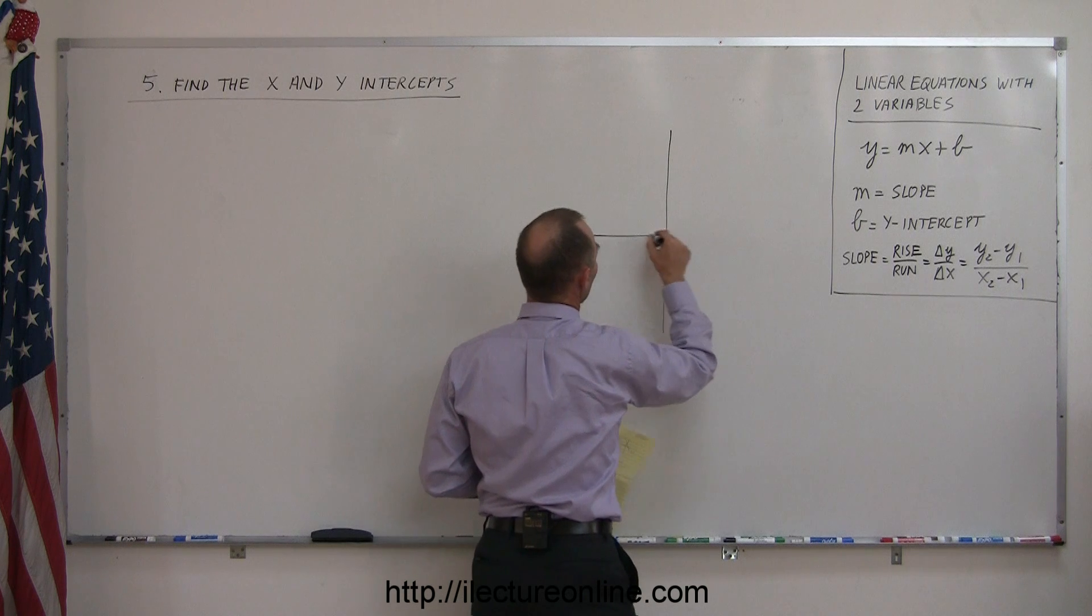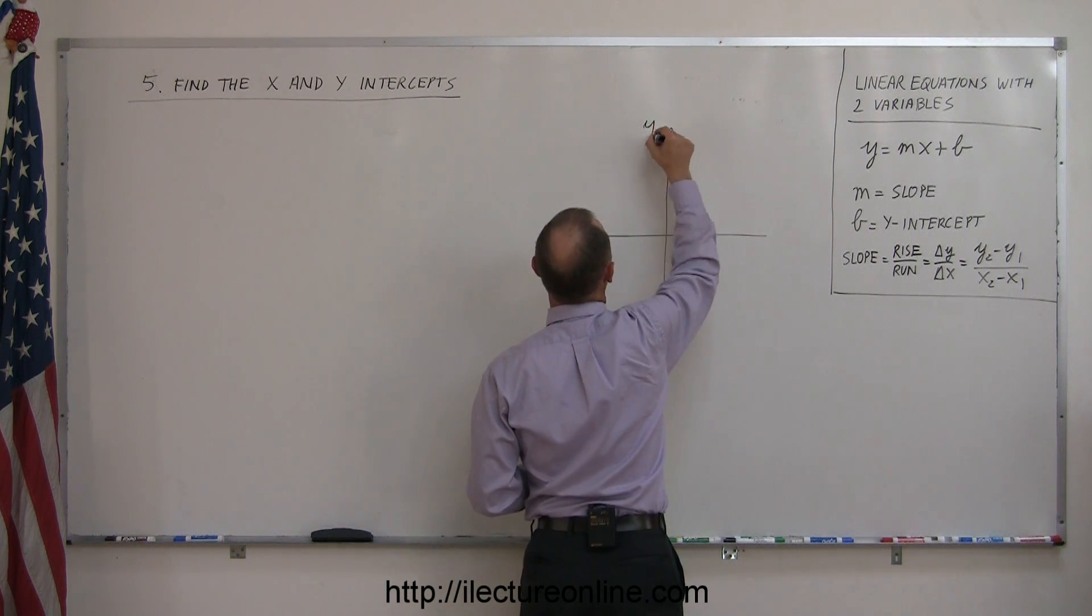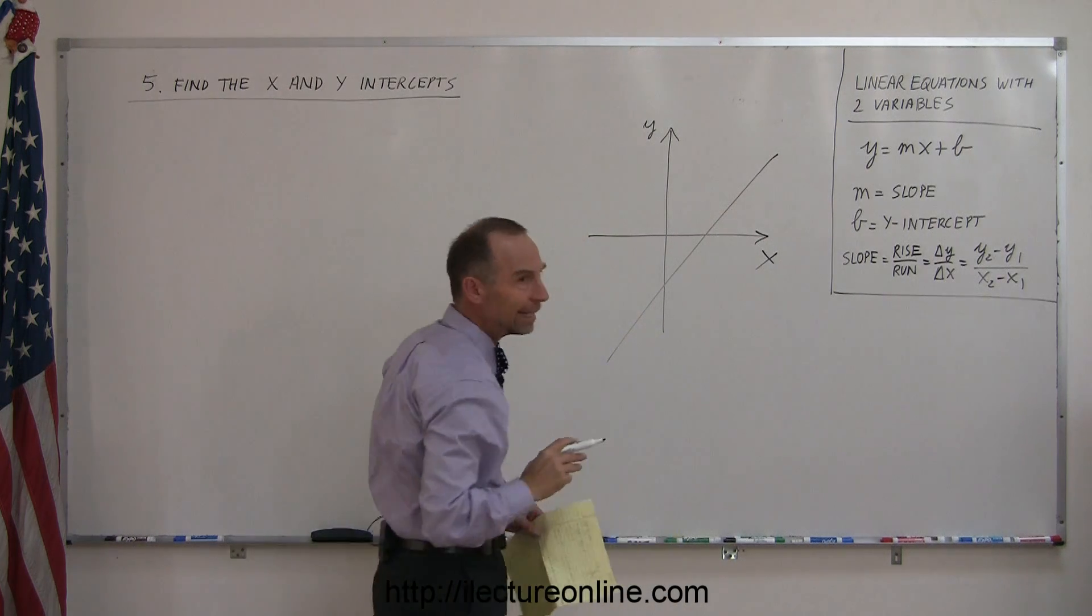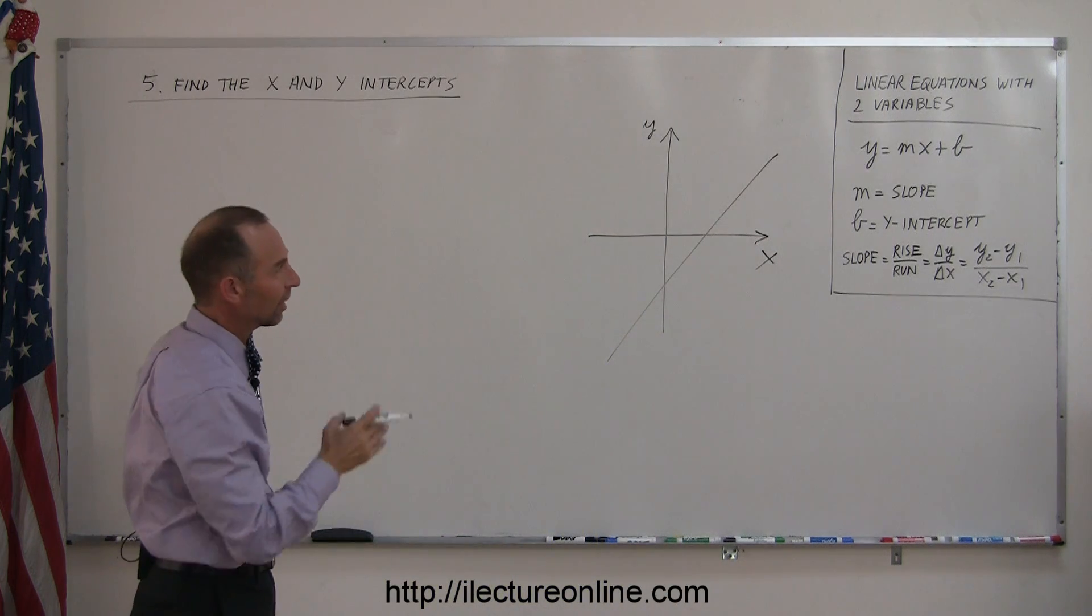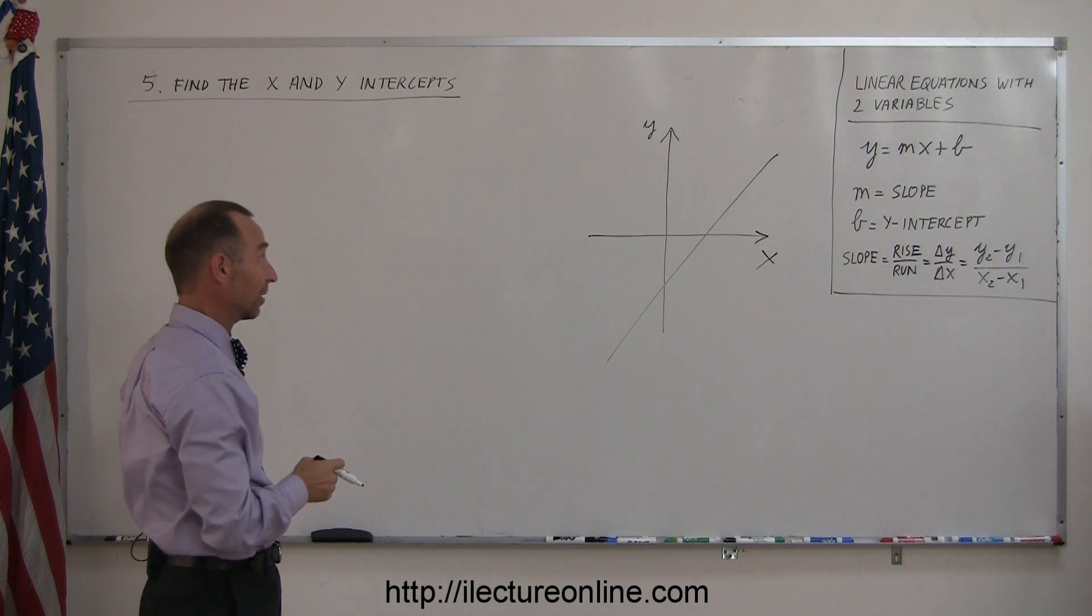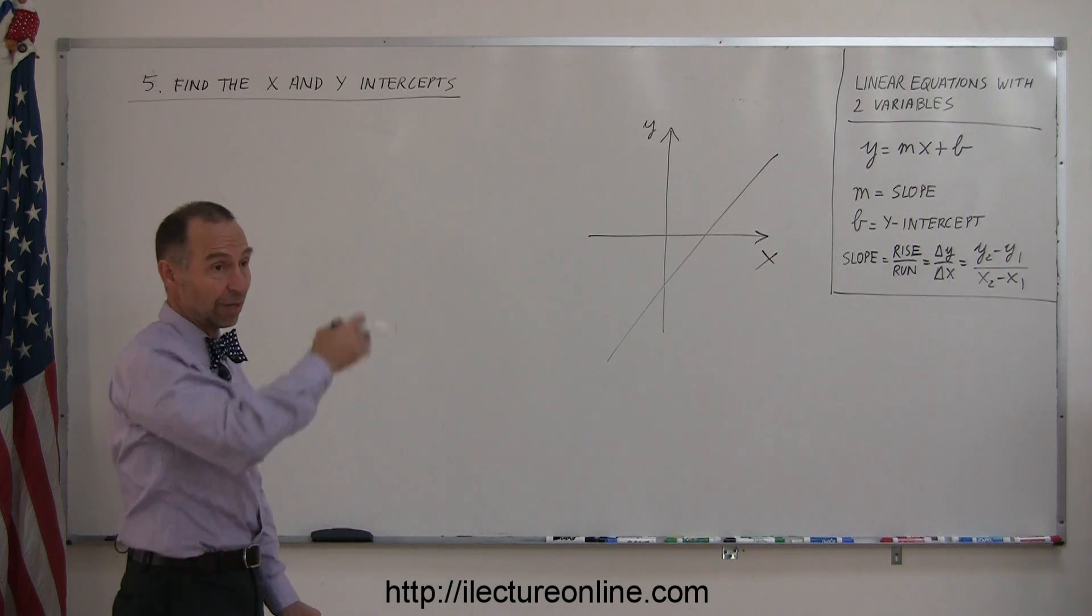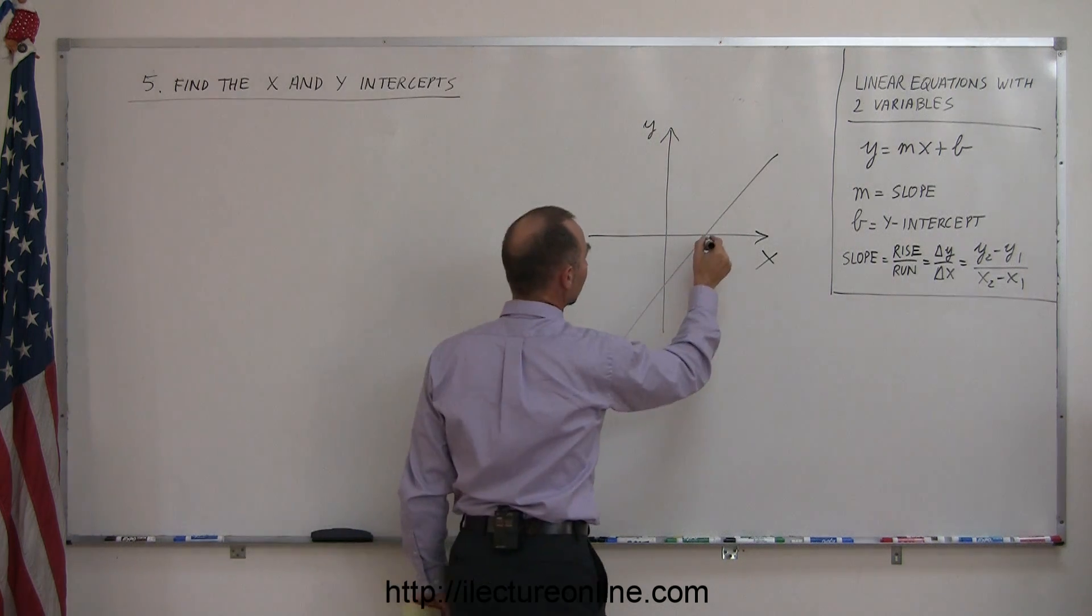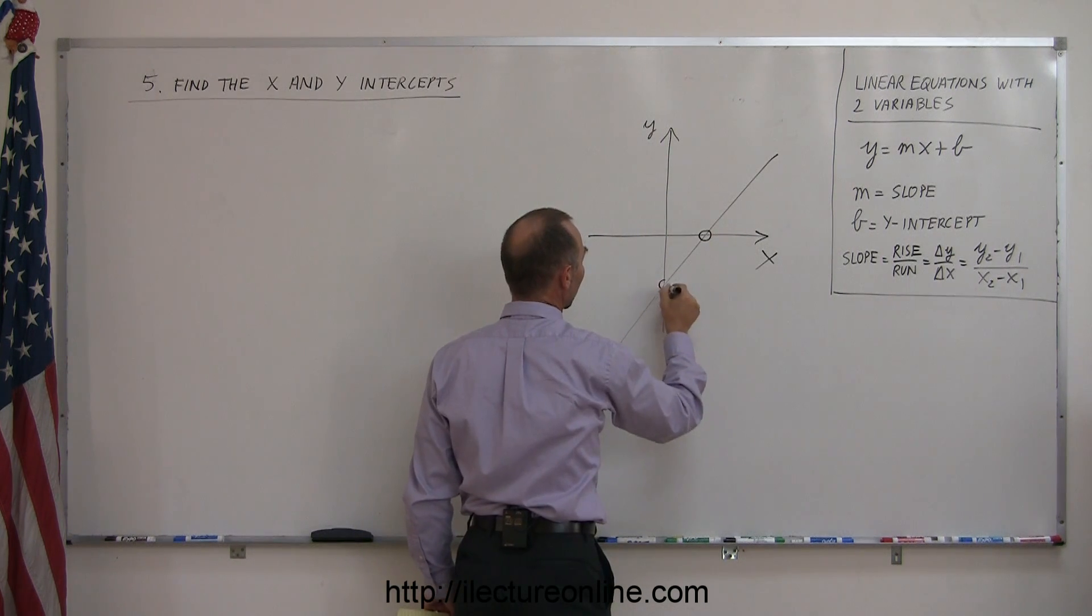Let's say we have an equation, a linear equation, and we graph it, and the equation looks like this. Any line representing a linear equation that is not parallel to the x-axis or parallel to the y-axis, meaning straight up and down or horizontal, will at some point cross the x-axis and at some point cross the y-axis.